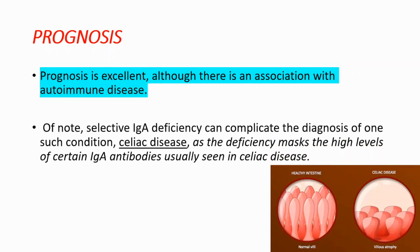Lastly, let's talk about prognosis. The prognosis is excellent, although there is an association with autoimmune disease. However, in selective IgA deficiency, the disorder can complicate the diagnosis of celiac disease, because the deficiency masks the high levels of certain IgA antibodies usually seen in celiac disease, making diagnosis harder.